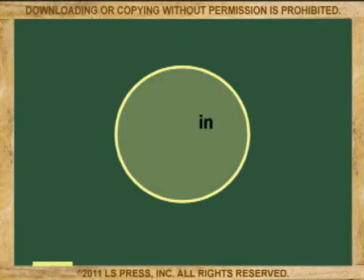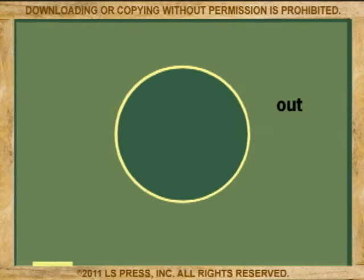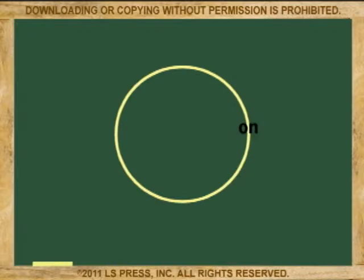Like polygons, a circle has an internal or interior sector, an exterior or outside sector, and whenever we're referring to the circle itself, we call it on the circle. So point A is in the circle, point B is outside the circle, and point C is on the circle.